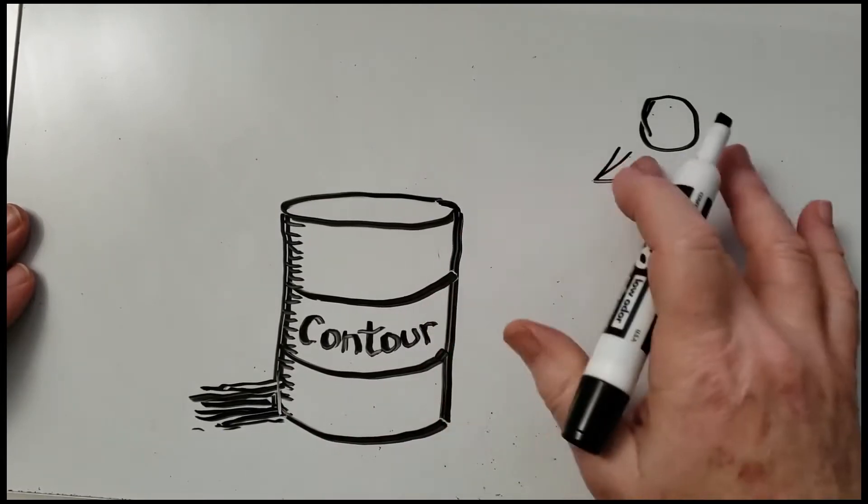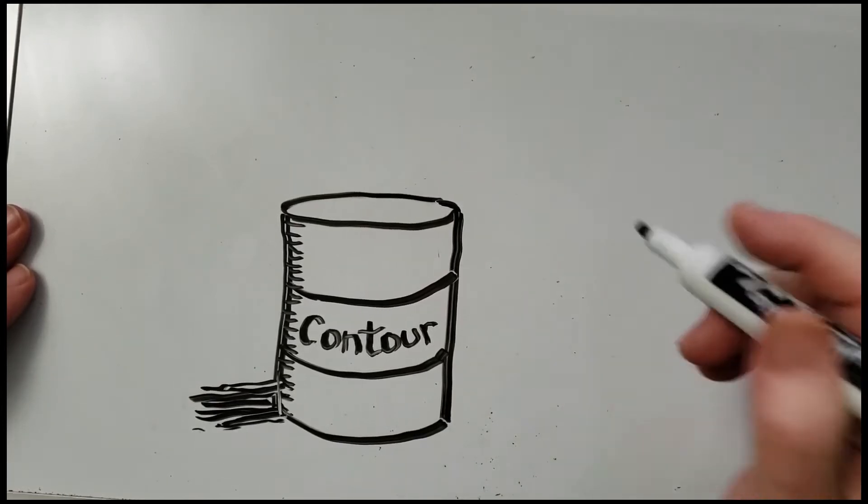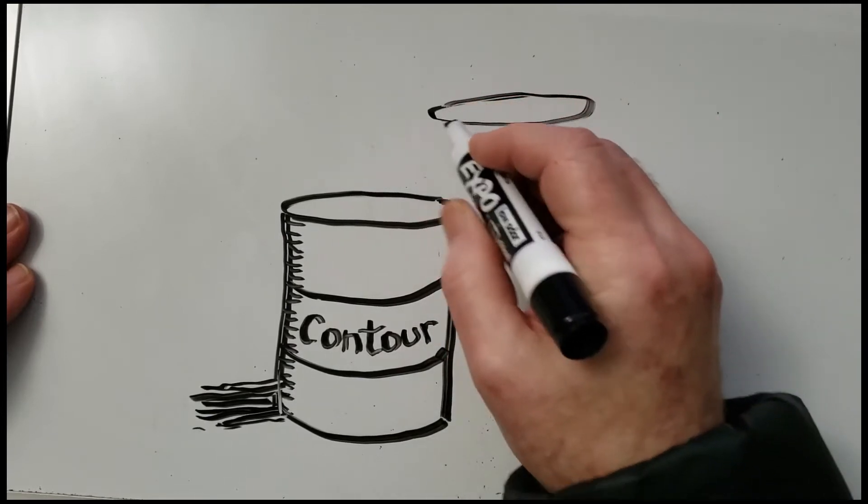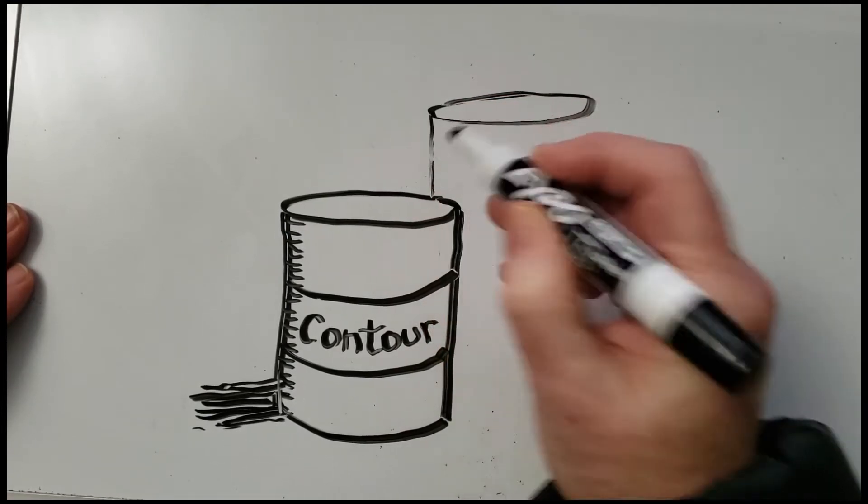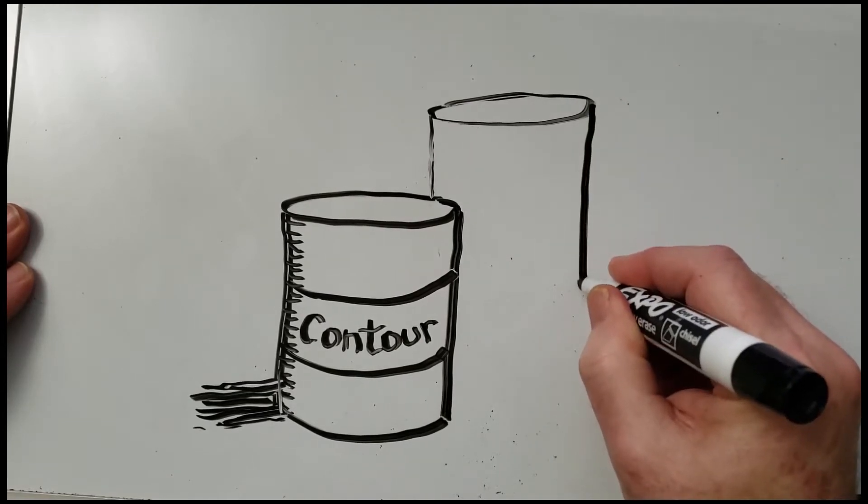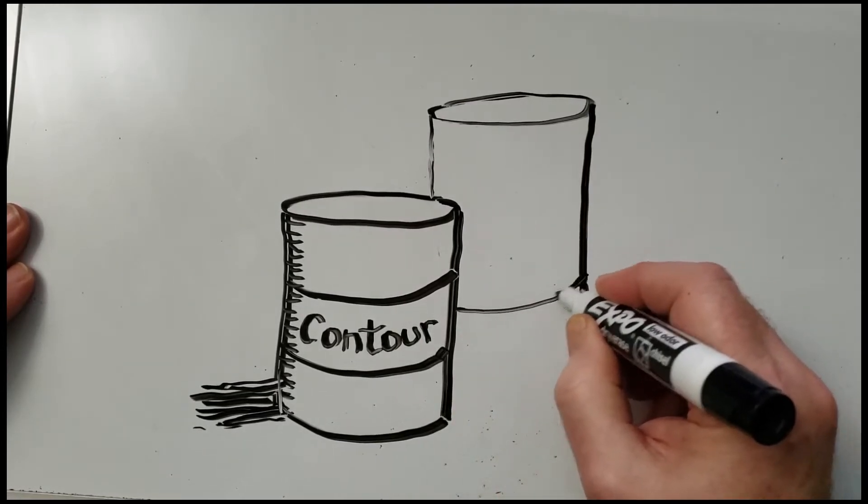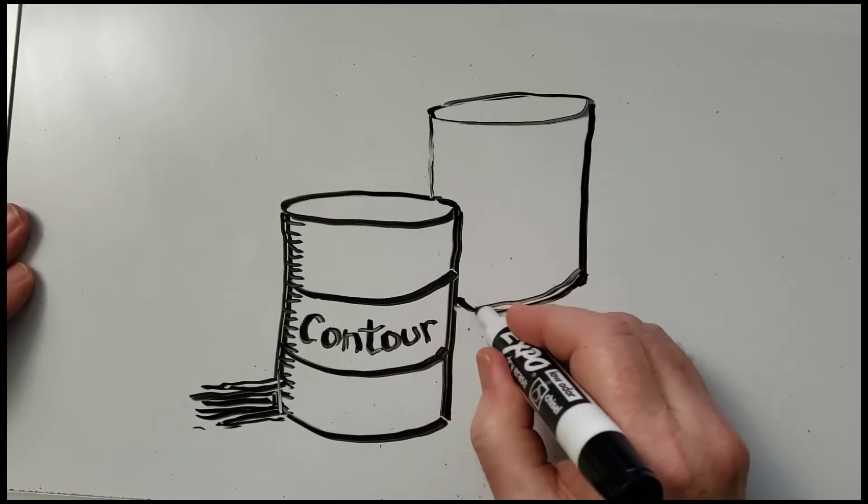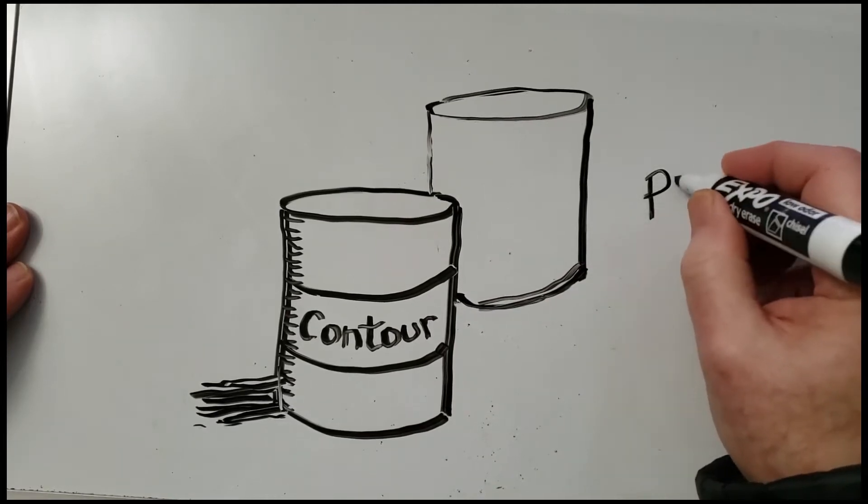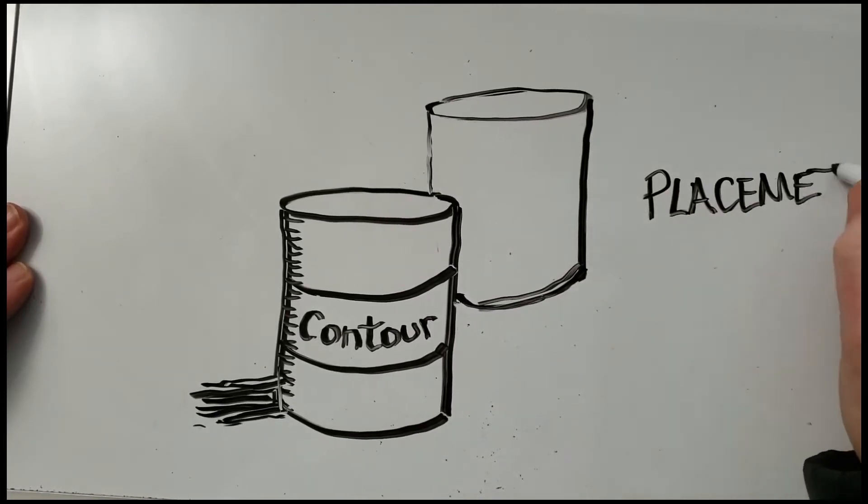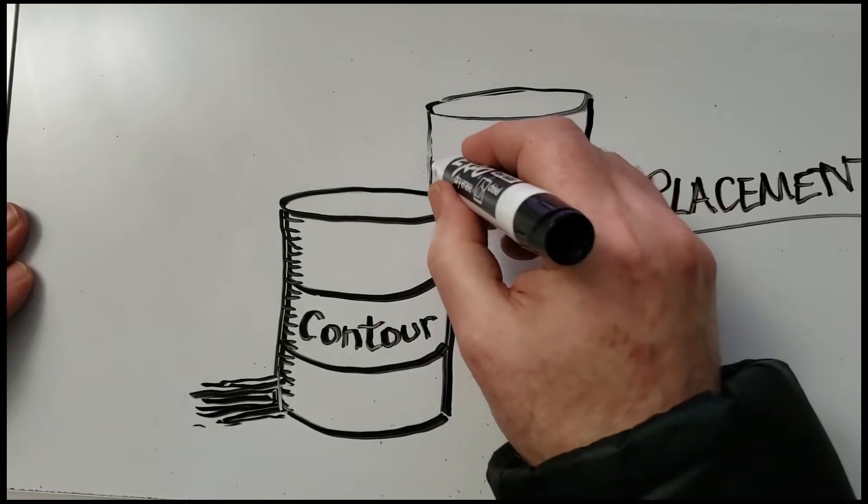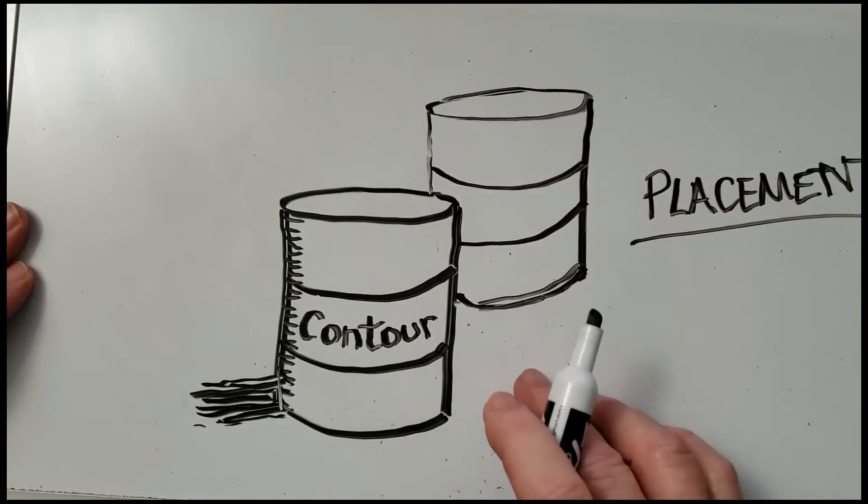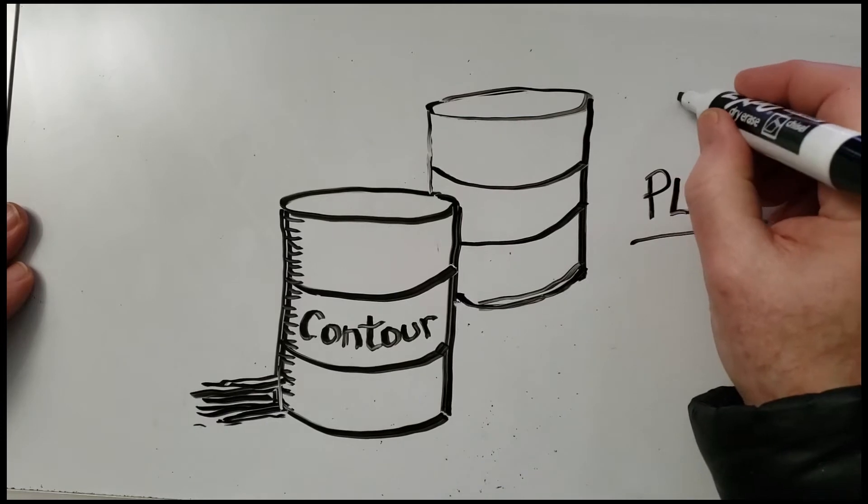Now for the next word, I'm going to have to draw another can. I'll draw it up here. The first thing I'm going to do is change its placement. By placing it higher on the page, it looks like it's farther away.